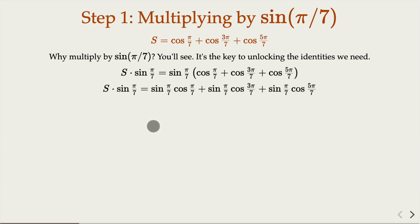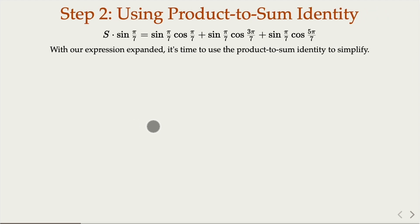Now we can use product to sum identity here. Now the first term, however, you can just use the fact that sine x cosine x is equal half of sine 2x. All right, let's do that. So this sine 2pi over 7 and there's a one half in front of it.